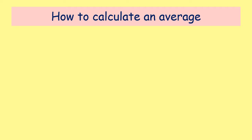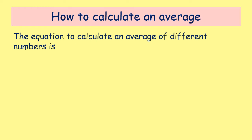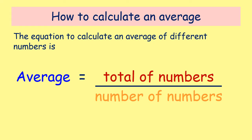The first of those is averages, and you need to be able to calculate an average. We're going to show you the method and talk through four different examples. The equation we're going to use to calculate an average is: the average is equal to the total of all the numbers you're given — total means add them all together — and that line means to divide. So you work out the total of all your numbers and divide by the number of numbers you have.